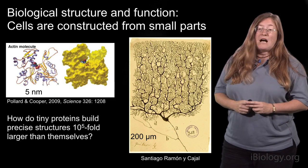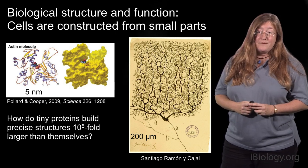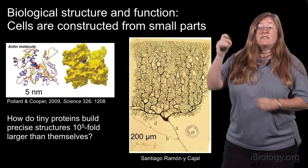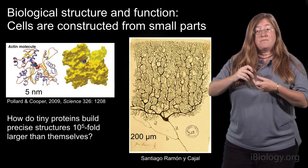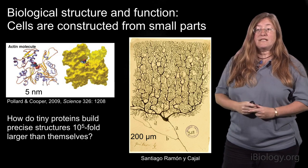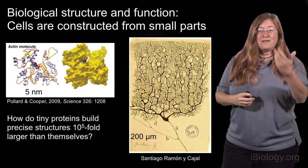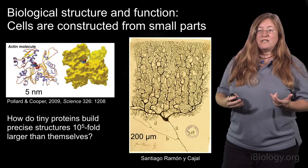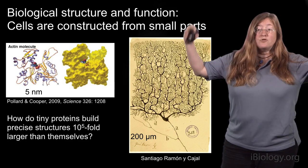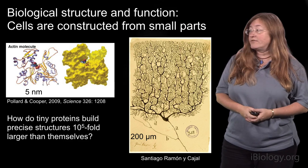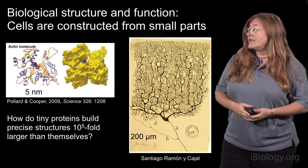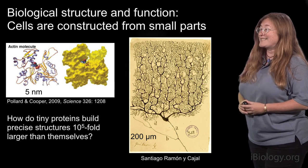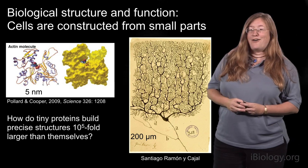It has the capacity to bind and hydrolyze ATP. However, it also has the capacity to self-assemble, to make filaments made up of many identical copies of the same protein. And by that self-assembly process, actin and other cytoskeletal proteins like it are able to elaborate tremendously complicated structures inside of living cells, giving rise to shapes like the beautiful Purkinje cell shown here in this classic drawing by Santiago Ramón y Cajal.